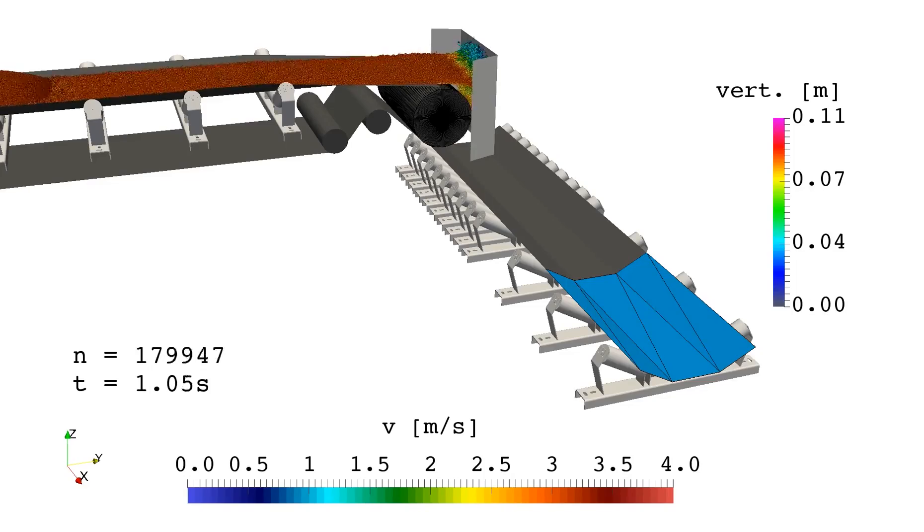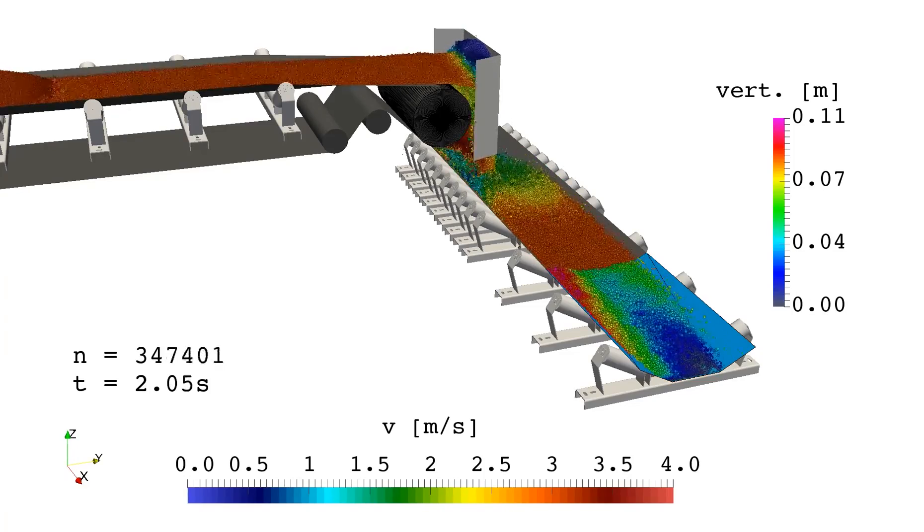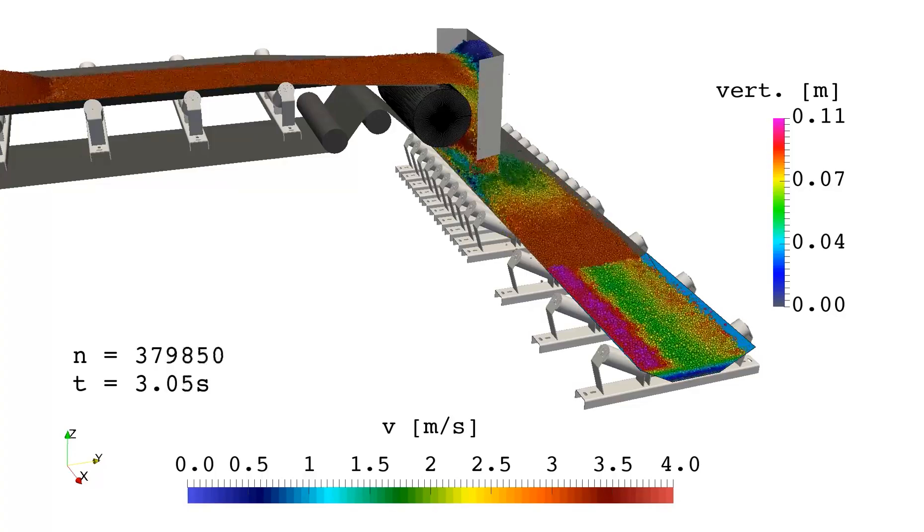This simulation shows the transfer chute with the adjustable impact wall. The impact wall moves backwards during the simulation.